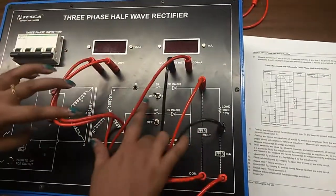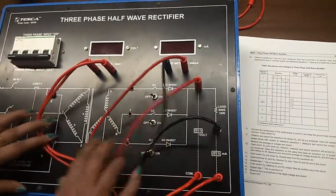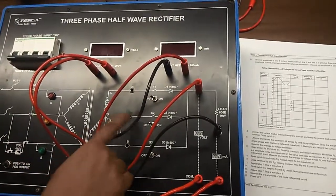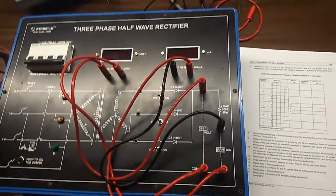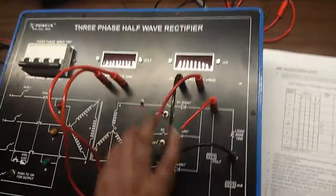Here we can see there are three diodes used, as this is a three-phase connection. Each diode is used for each phase for half-wave rectification.